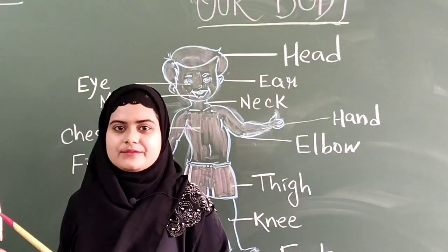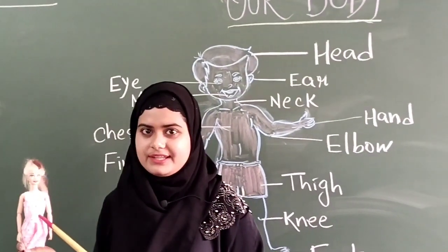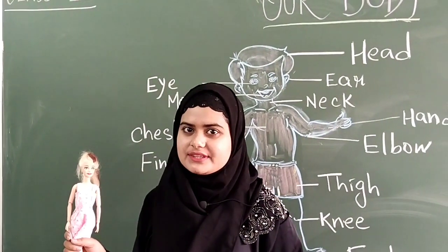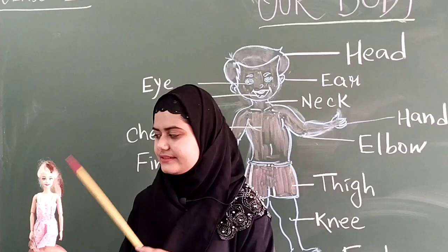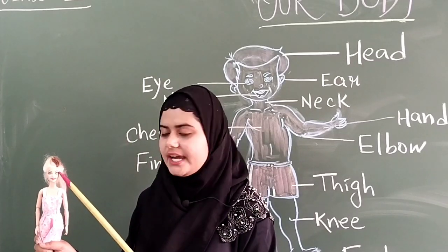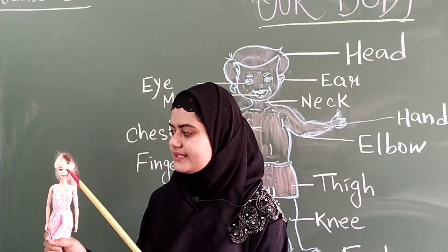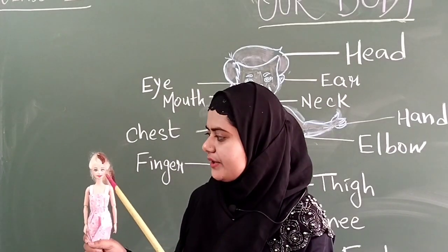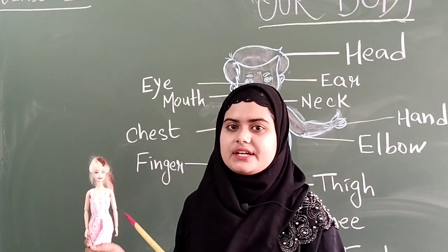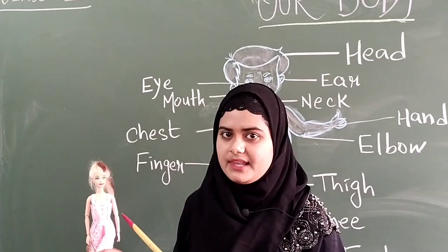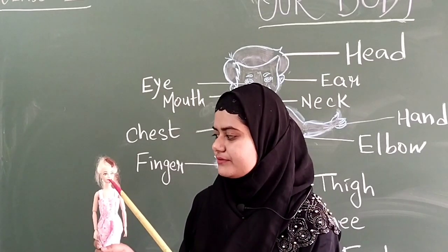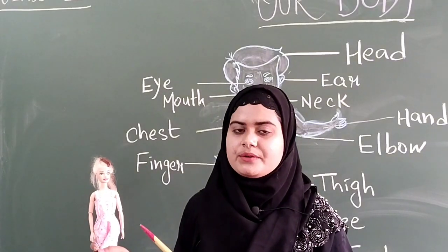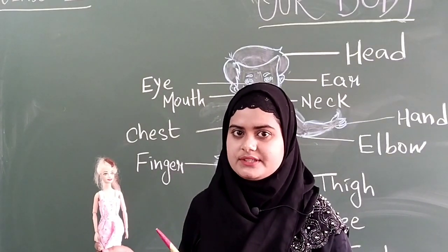We always play with our doll but today in this class we are going to learn something with our doll. This is hair. This is eyebrow. This is eyes. With our eyes we see the world. This is nose. With our nose we do smell. This is mouth. This is teeth. The white color part inside our mouth is teeth.